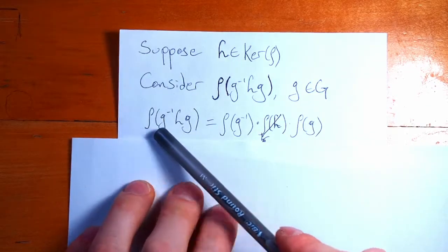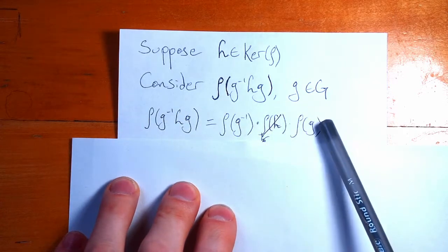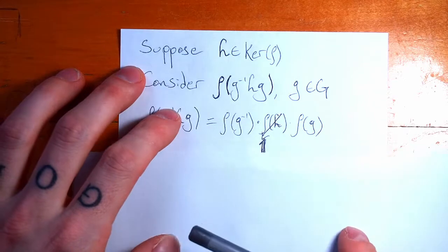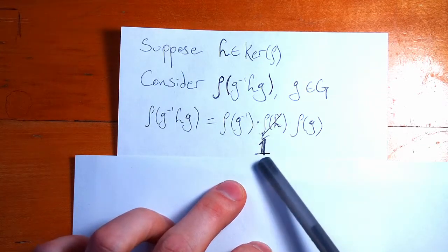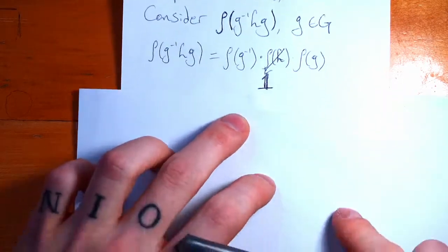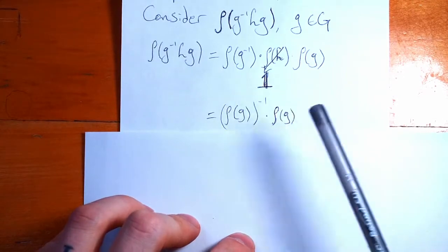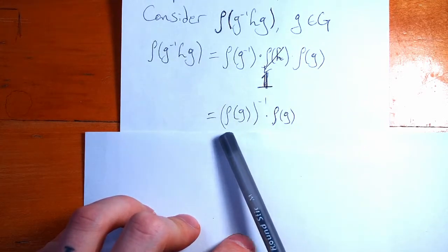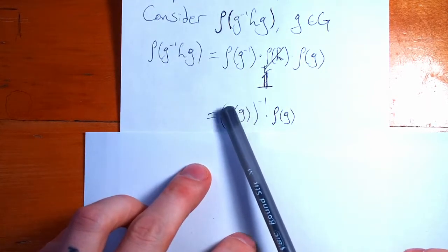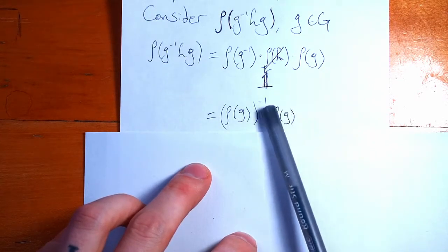If we start by using the homomorphism property of our representation, we can take the product before mapping and write it as the product after mapping. But rho of h is simply the identity because it's in the kernel. In a more general proof, this should just be the identity. I'm sticking with the matrix identity because this is a video series on representation theory. So the identity goes away, and then we can use the property of homomorphisms where we can pull out powers, in a sense. And so we pull out the inverse, and we have rho of g. That is some element. This will be a matrix if we're thinking of representations.